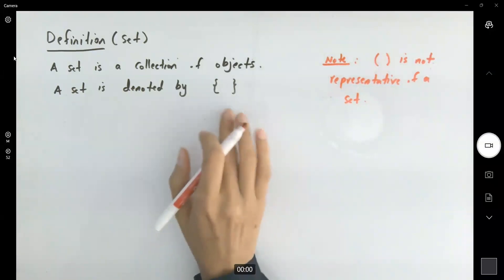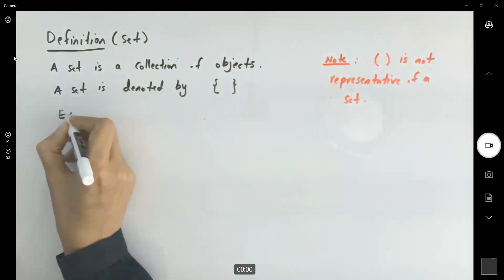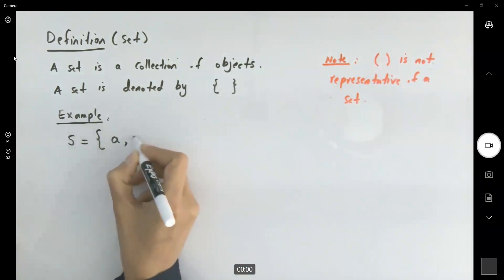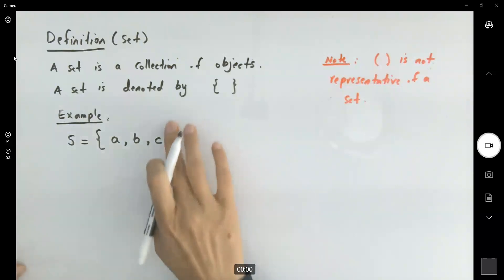To represent a set, you need to use proper symbols, curly brackets. For example, the very first set that I'm going to introduce here is S equals the set of a, b, c.